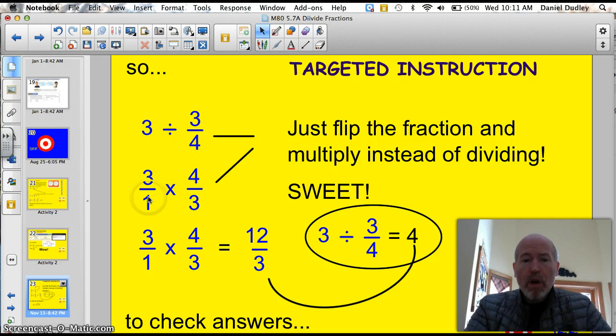3 times 1, or 3 over 1, times 4 thirds. See? I just changed the sign. Flip the fraction from 3 fourths to 4 thirds. So, let's do it. 3 times 4 is 12. 1 times 3 is 3. So, you got 12 over 3. The answer is 4.